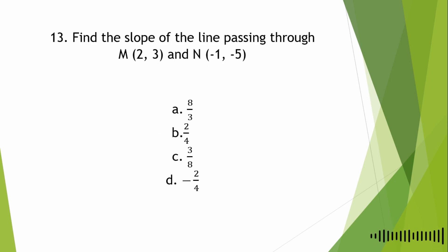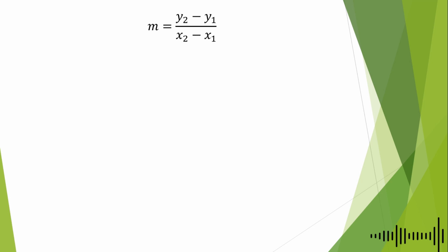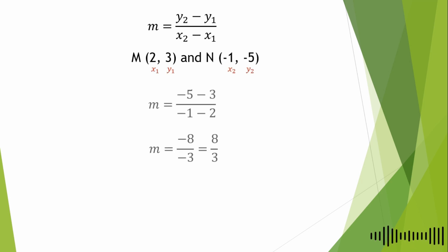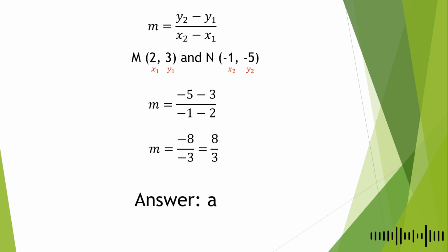Find the slope of the line passing through M(2, 3) and N(−1, −5). A. 8/3, B. 2/4, C. 3/8, D. −2/4. The slope formula is: m = (y₂ − y₁)/(x₂ − x₁). Substituting: m = (−5 − 3)/(−1 − 2) = −8/−3 = 8/3, since a negative divided by a negative is positive. The answer is letter A.